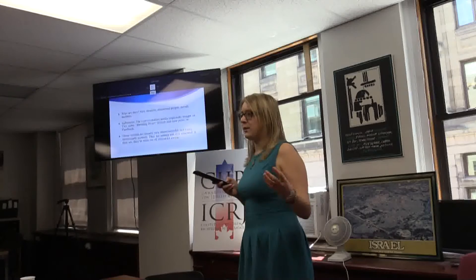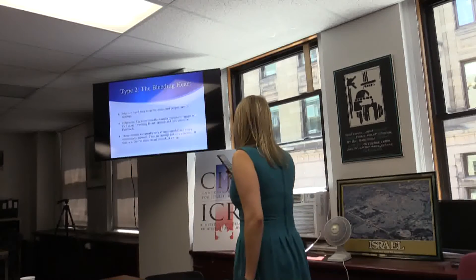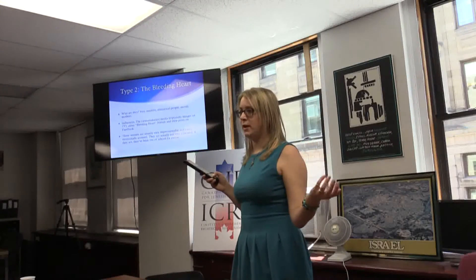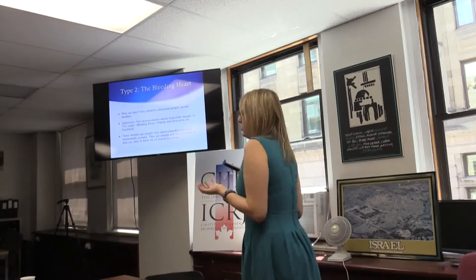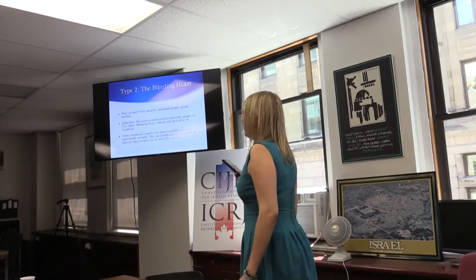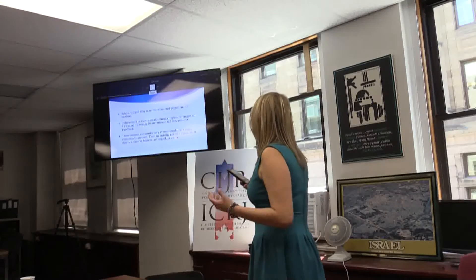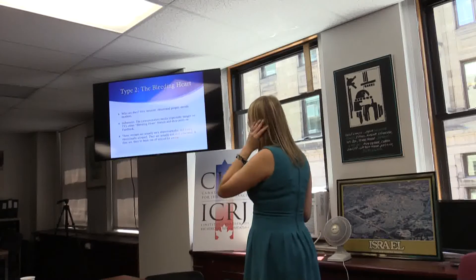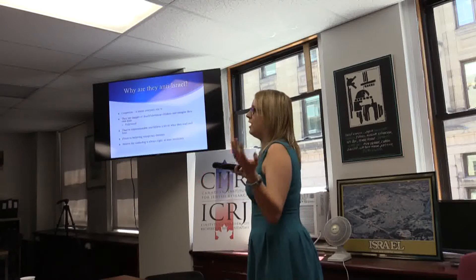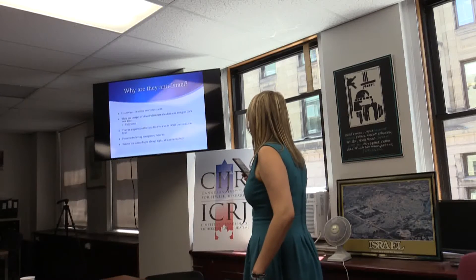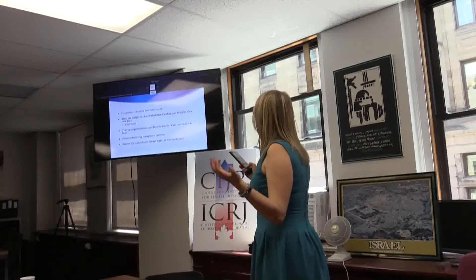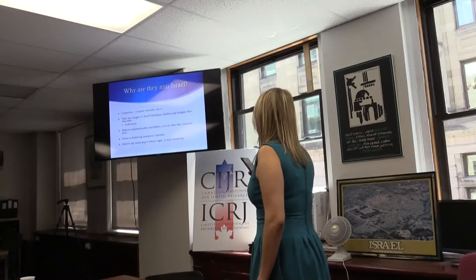Raise your hand if you know somebody like Laura O'Neill — she's very common. Who are they? Very intuitive, emotional people, mostly mothers. Their influences are sensationalist media, images on TV, and other bleeding-heart friends' Facebook posts. These women are usually very impressionable and easily emotionally aroused. Why do they do it? The grapevine — everyone else does it. They see kids and imagine their own. Hollywood. They're prone to believe conspiracy theories, believe the underdog is always right, and love broad sweeping generalizations — unlike the academics. That's why you really need to know who you're dealing with.